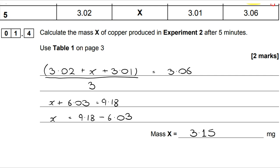I can give myself a very quick check here, because 3.01 and 3.02 are both below 3.06. I know my answer is going to be above 3.06 to bring the average up.